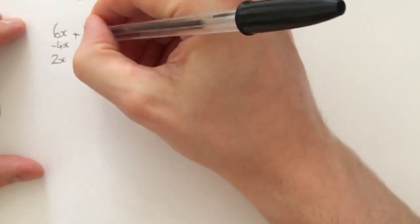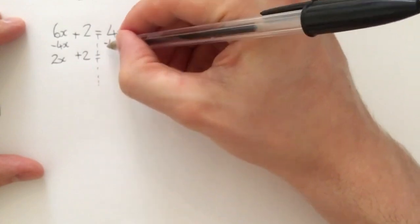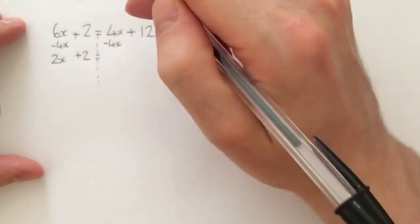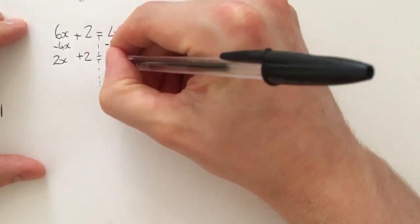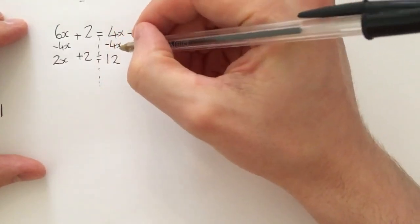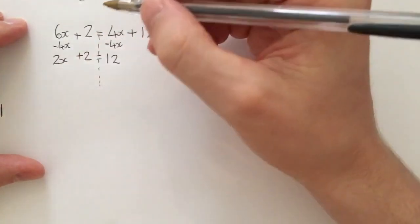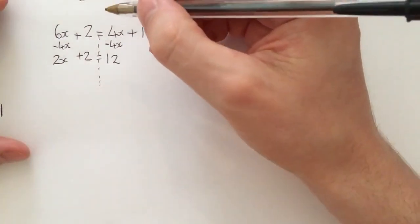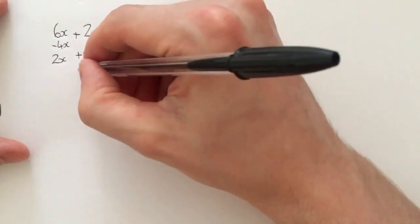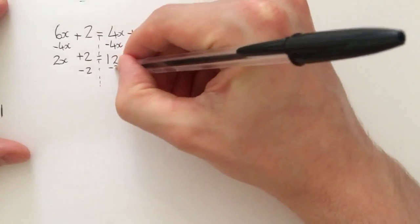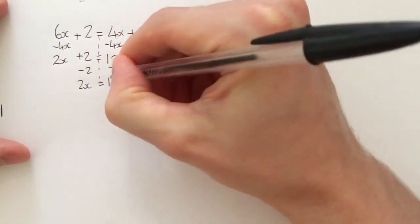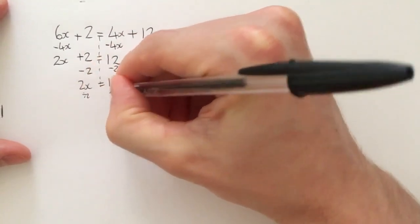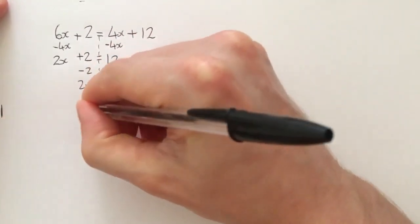Plus 2 because that hasn't changed, equals 4x take away 4x is 0, so I leave that positive 12. Now I've got x just on one side and I'm good to go. I just solve the equation like I normally would: minus 2, minus 2, 2x equals 10, divided by 2, divided by 2, x would equal 5.